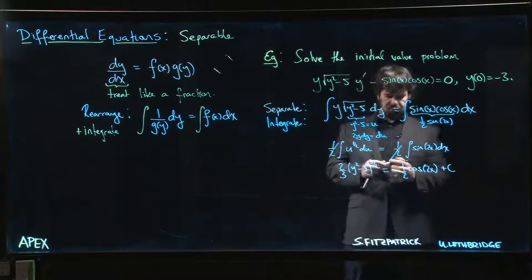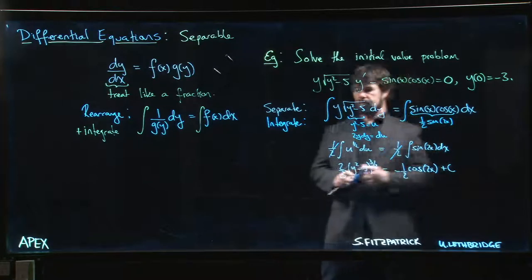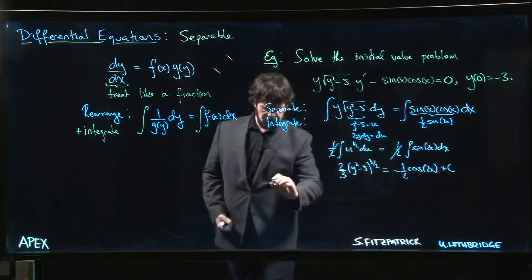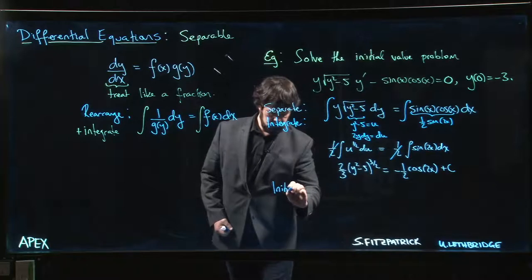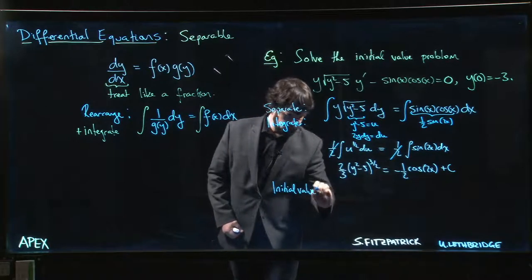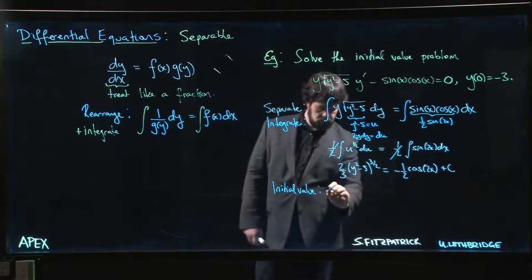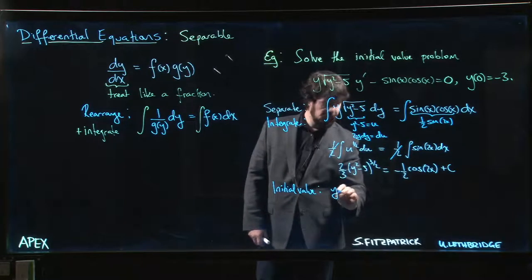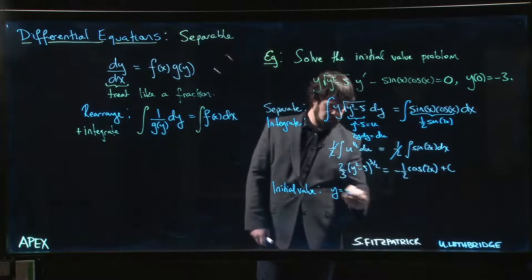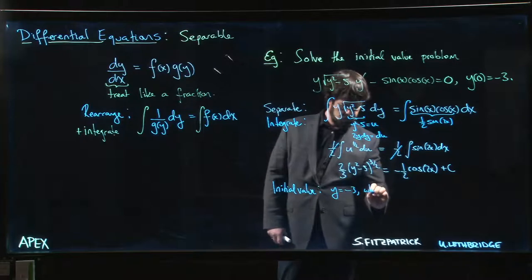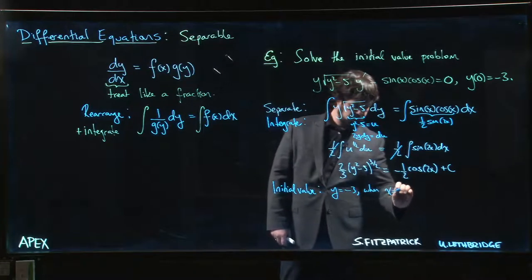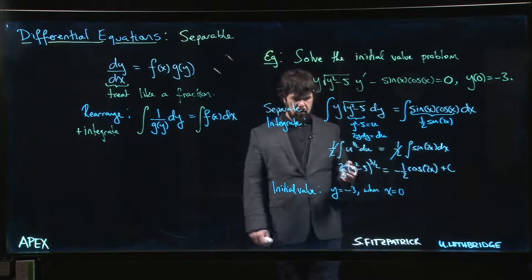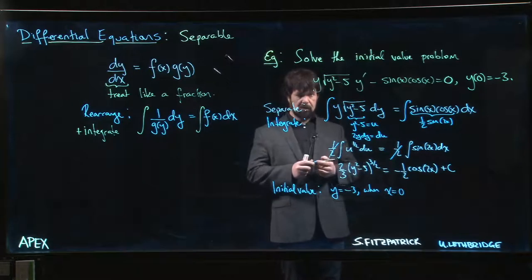So we say, let's put in the initial value: y is equal to minus three when x is equal to zero. Let's put those values in and see what we get.